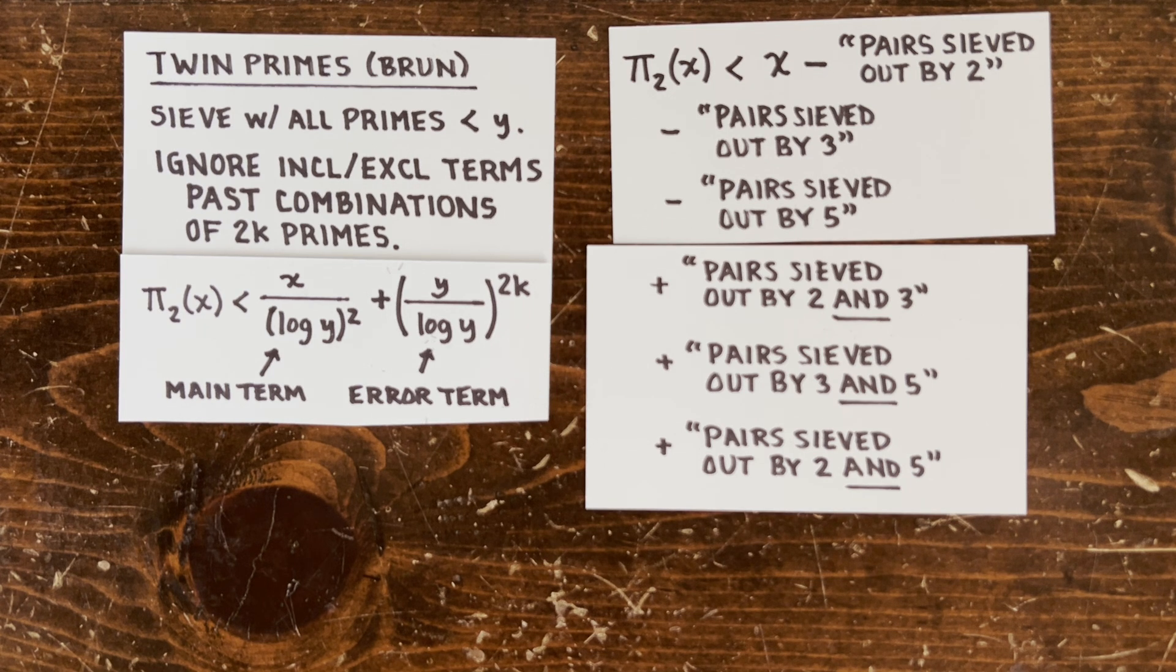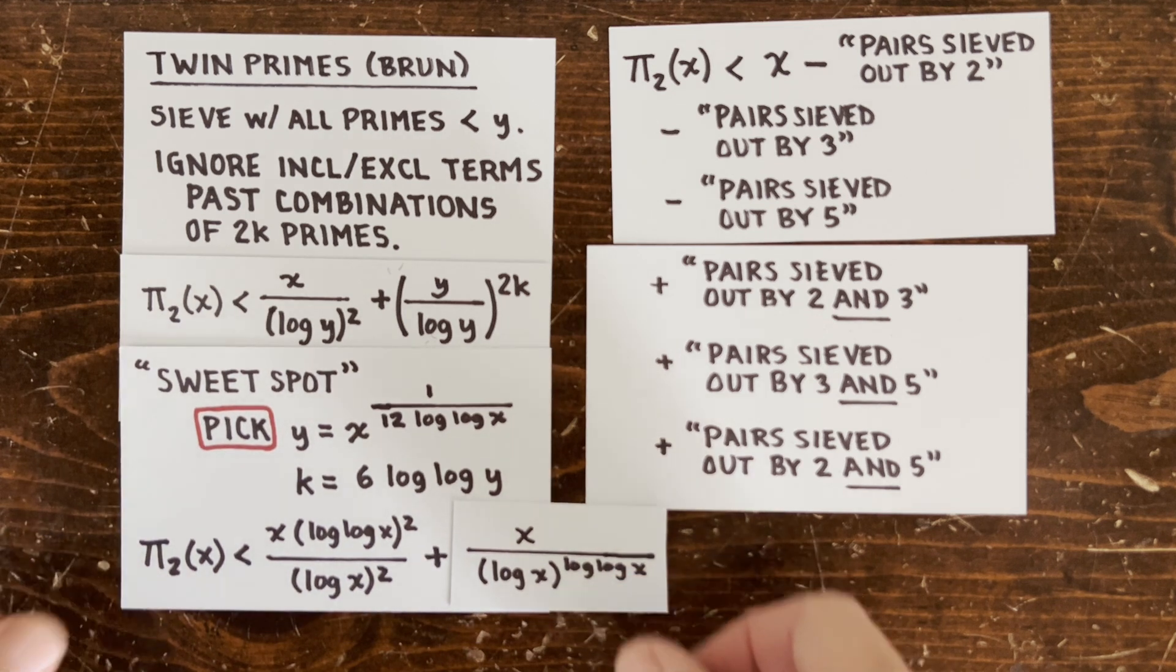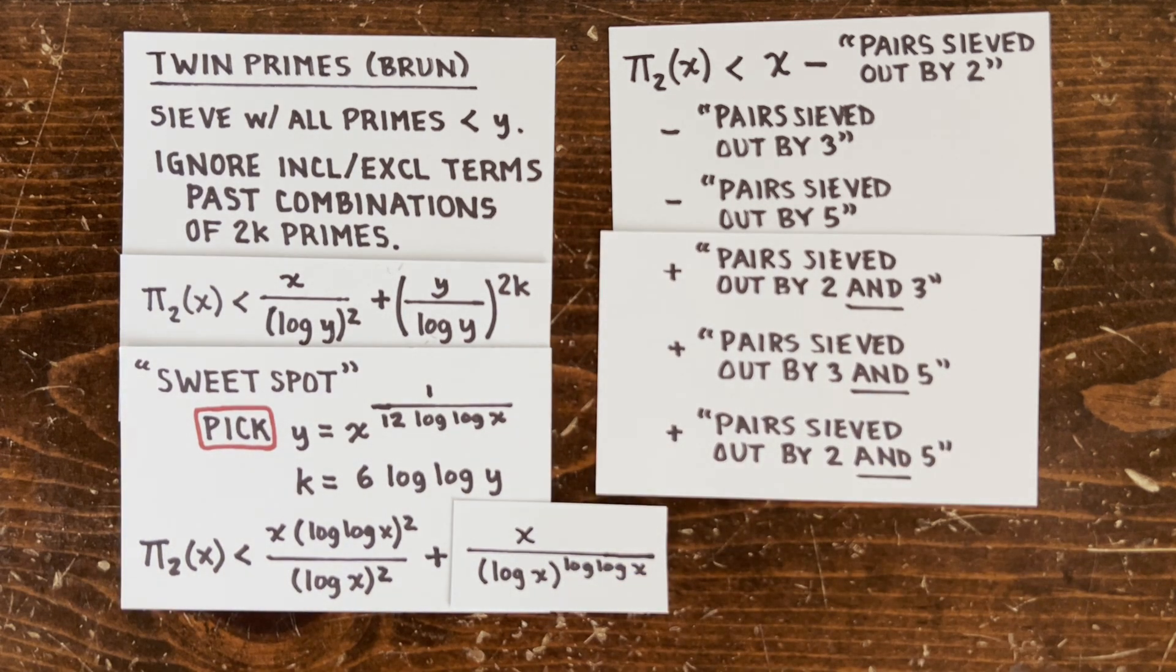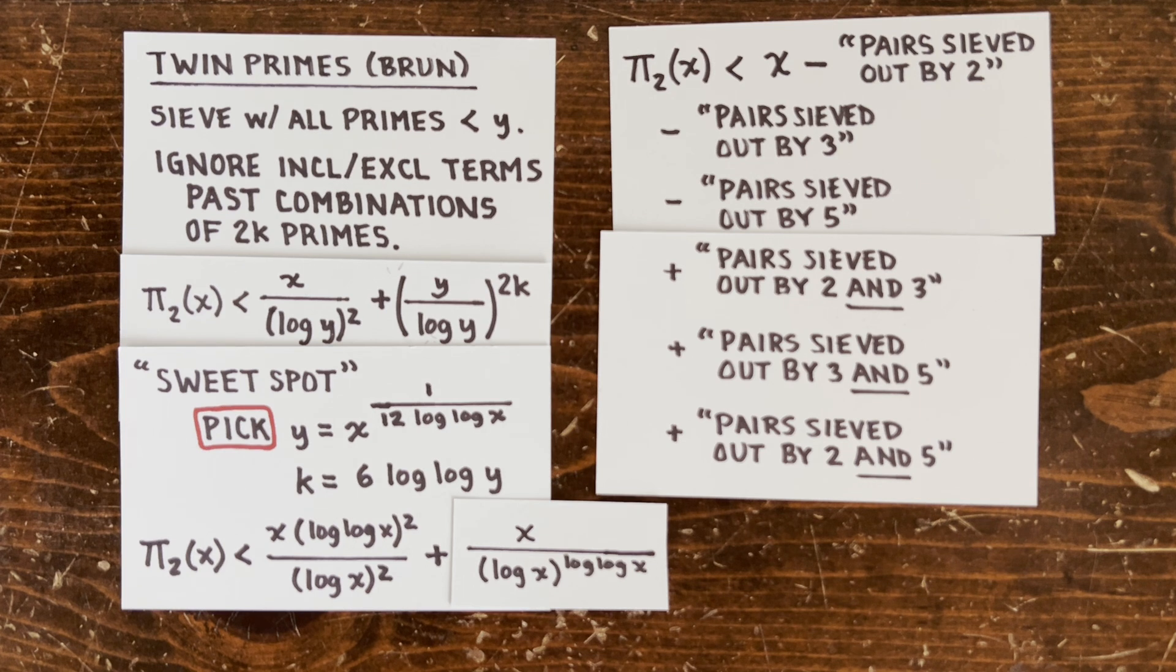And this is totally legit for the inequality because everything past here turns out totals to the negative. So by lopping off lots of terms, he limits the errors due to flooring. And with some careful work, he winds up with this main term and this error term. And now he has to thread the needle. His sweet spot is to sieve with all primes up to x to the 1 over 12 log log x. And to lop off the inclusion-exclusion formula at k equals 6 log log y. That's the sweet spot.